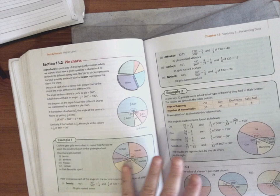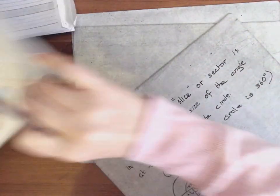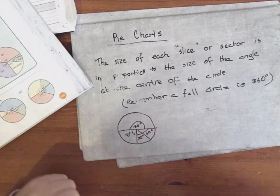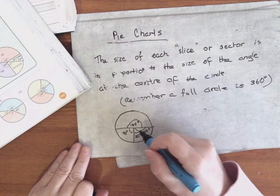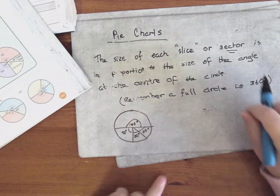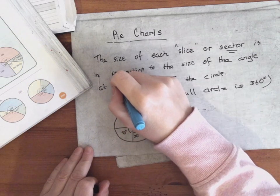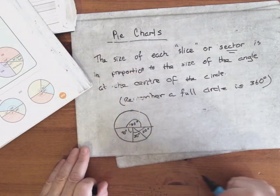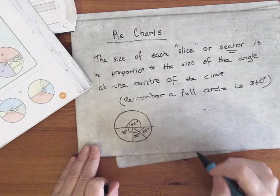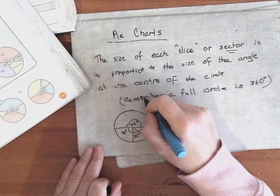Right, okay, straight away you can see what's most popular, etc. So pie charts — the size of each slice or sector. Slice is just to tell you what it is; the proper word is sector. Like a pizza slice is actually a sector of a circle. The size is in proportion to the size of the angle at the centre of the circle. And remember a full circle is 360 degrees.